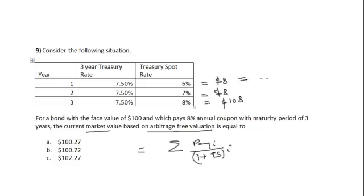For the first year, the present value will be $8 divided by 1.06. For the second year, it will be $8 divided by 1.07 whole square. Remember, we are using the treasury spot rate to get the present market value of the bond. We are not using the three-year treasury rate. The third payment will give the present value of $108 divided by 1.08 cube.